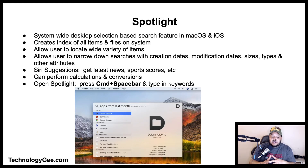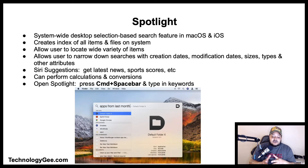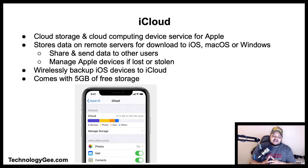Spotlight also allows users to narrow searches by creation dates, modification dates, sizes, types, and other attributes. With Siri suggestions you can get the latest news, sports scores, weather conditions, and more. Spotlight can even perform calculations and conversions. Open Spotlight by pressing Command + Spacebar and type keywords to search the entire system.